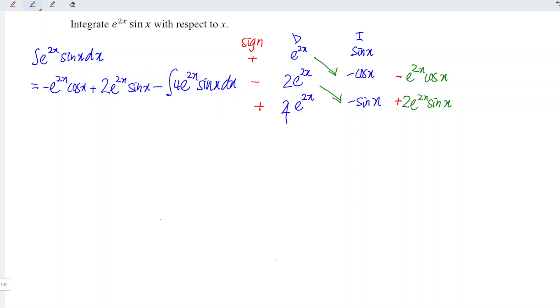And now let's rewrite this equation and bring all the integrals to the left. So we have integrate e to the power of 2x sin x dx minus, bring over to the left becomes plus.